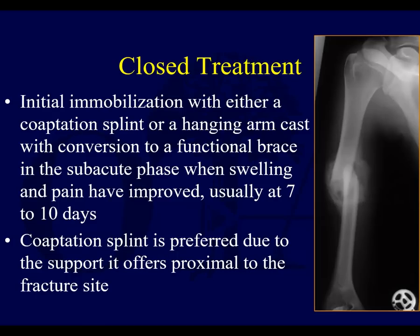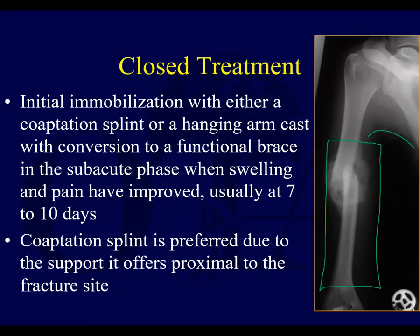With closed treatment, initial immobilization could be with a coaptation splint or maybe a hanging arm cast. Most surgeons will transition to a functional fracture brace in the subacute phase — seven to ten days or around about that time. A coaptation splint can offer better support for the fracture early on because it can get much more proximal. Even with a brace applied as high as possible, it gets very close to the fracture site itself, whereas a coaptation splint that comes up and over the top potentially has better control proximally. But that's usually just initial management.